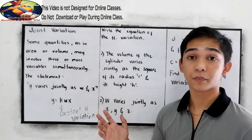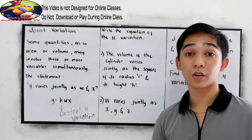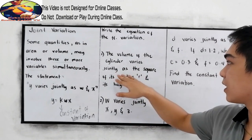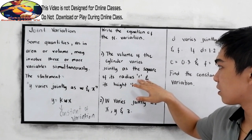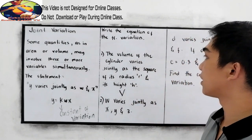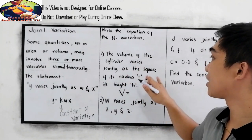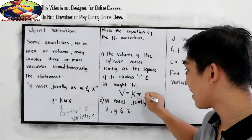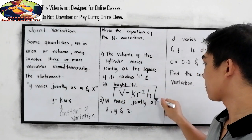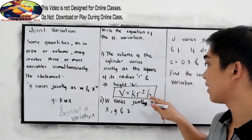Let us answer the following problem. Write the equation of the following variations. Let k be our constant of variation. The volume of the cylinder varies jointly as the square of its radius and its height. So we have the volume of the cylinder equals k times r squared times h. This will be the equation of our variation.